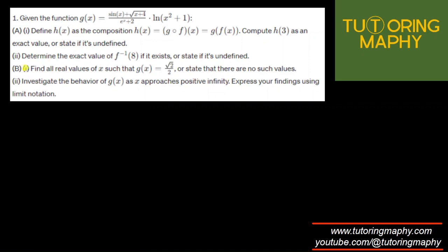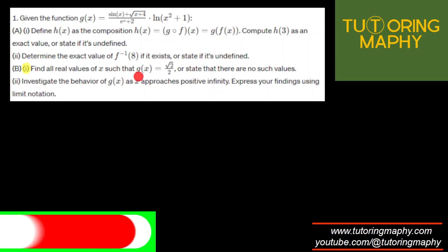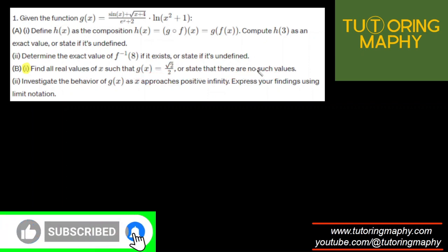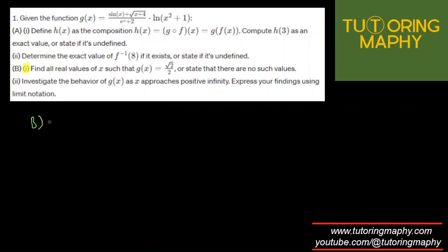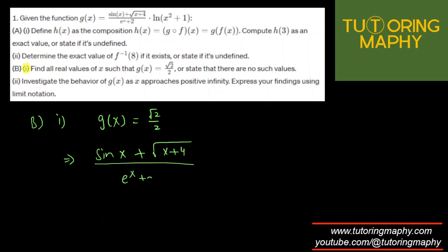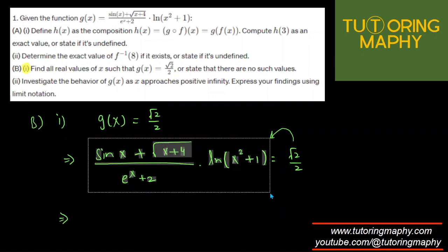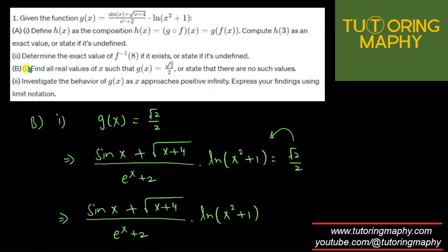Now for B1: find all real values of x such that g(x) = √2/2, or state there are no such values. We set sine of x plus square root of x plus 4, over e raised to x plus 2 times ln of x squared plus 1, equal to √2/2. Bring the right side over: the expression minus √2/2 equals zero.